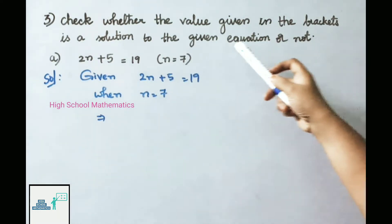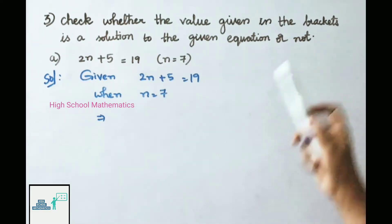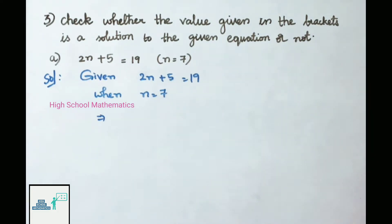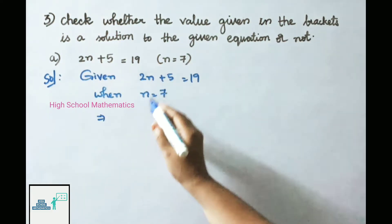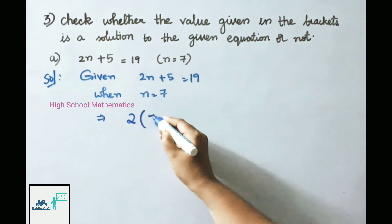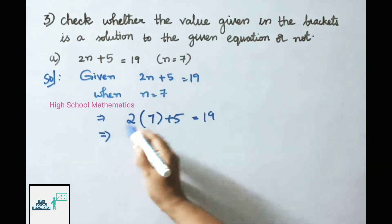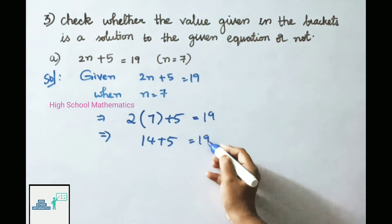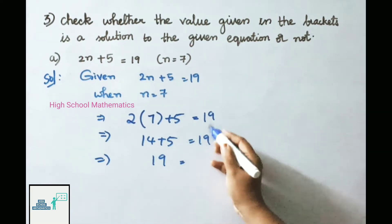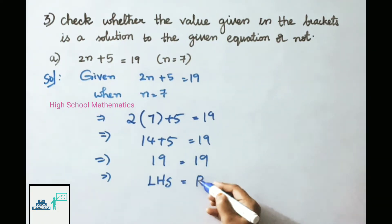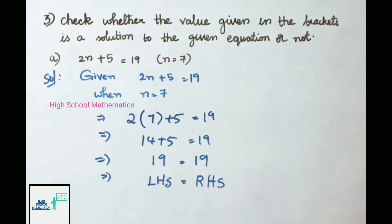Question 3: check whether the value in brackets is a solution. Part A: 2n + 5 = 19, when n = 7. Substituting n = 7: LHS = 2 × 7 + 5 = 14 + 5 = 19. RHS = 19. Since LHS = RHS, n = 7 is the solution for the given equation.